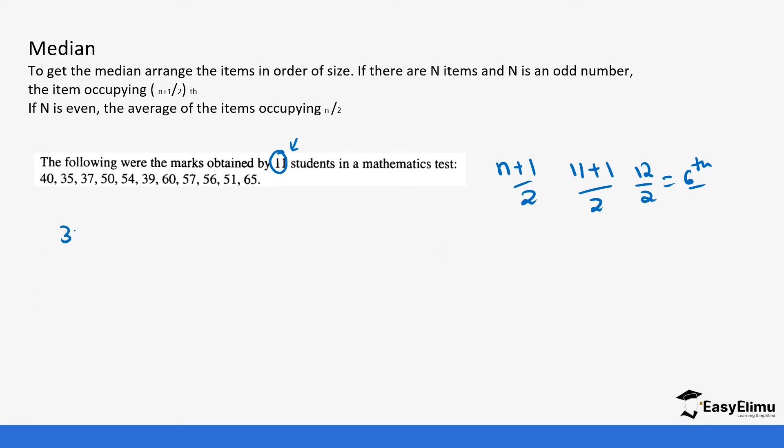We do so only when the data has been arranged in order of size. So let's arrange our data. The lowest value is 35, then 35 is followed by 37, then 37 is followed by 39, then 39 is followed by 40, 50, 51, 54, 56, 57, 60, and finally 60 is followed by 65.